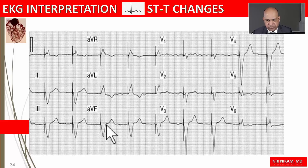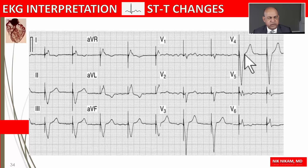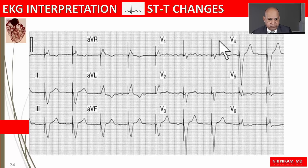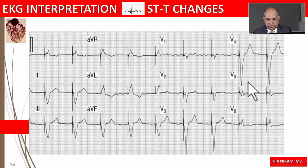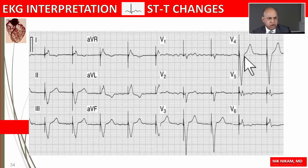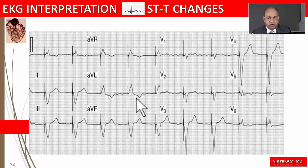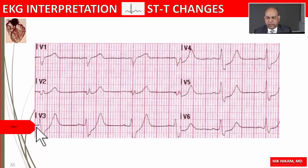Pacemaker rhythms behave like bundle branch blocks with wide QRS complexes and discordant ST-T changes. If the QRS complexes are going down, we see ST elevation and an upright T wave, whereas if the complexes are going up, we may see ST-T changes in the opposite direction as seen in aVL. These are normal ST-T changes related to the pacemaker and do not necessarily represent any evidence of myocardial ischemia.